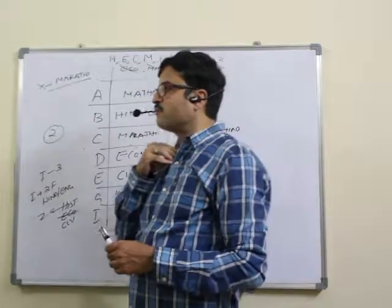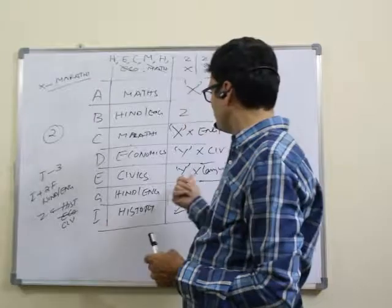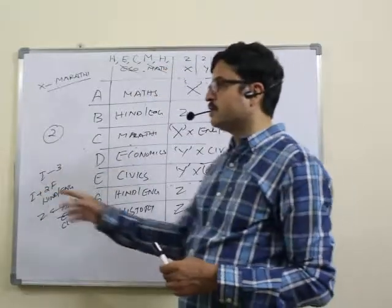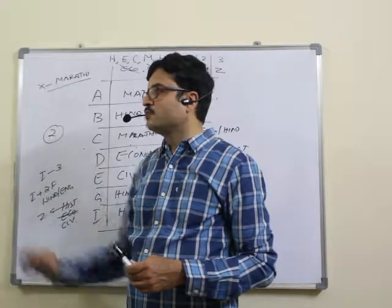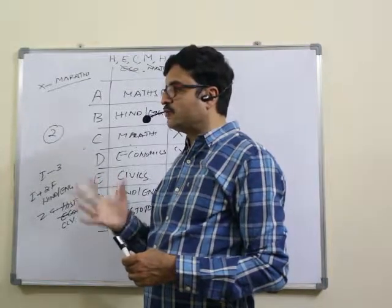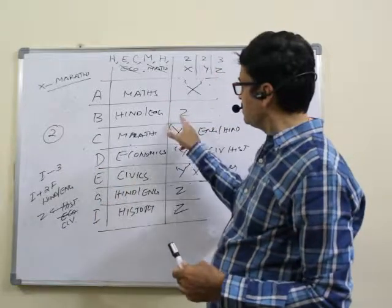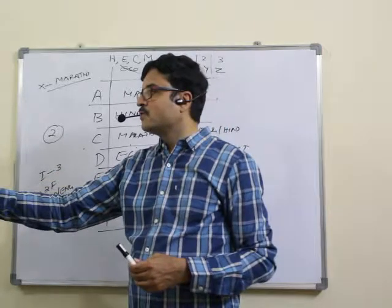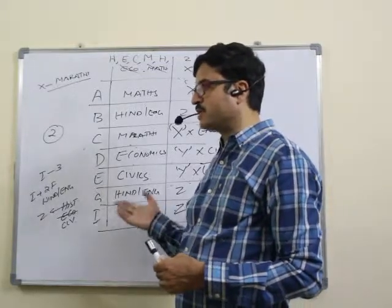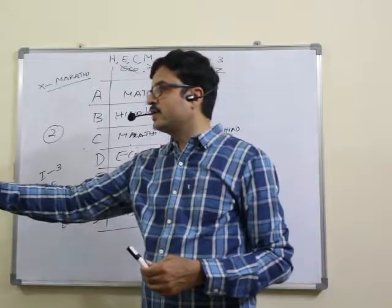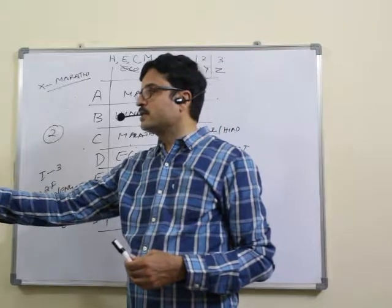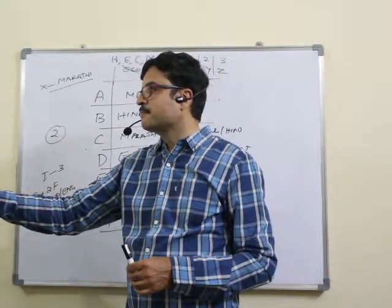Question 46: which combination represents E's favorite subject and college? Civics and Y college. Answer: 46, third option. Question 47: I's favorite subject is history. Answer: 47, first option. Question 48: which is definitely correct? B in Z is correct. Answer: 48, fifth option. Question 49: C and Marathi is definitely correct. Answer: 49, third option. Question 50: G likes Hindi or English — either Hindi or English. Answer: 50, second option.